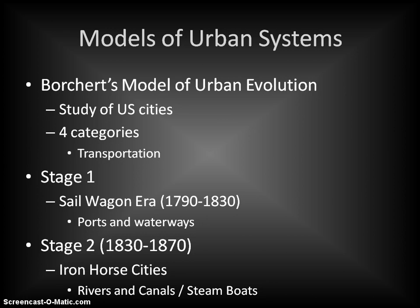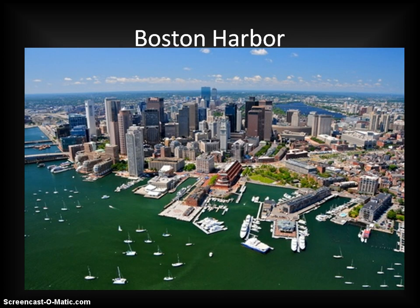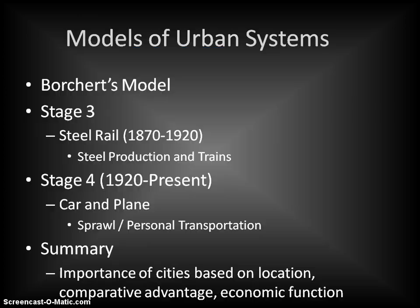Stage two covers 1830 to 1870, called the Iron Horse Era. This is when we start to get more focused on steam — steam engines and the development of steamboats. We also see more development of rivers and canals as methods of transportation and transporting goods. Cities focused on these modes of transport begin to develop. Boston Harbor, for example, was highly significant to the development of the United States during this period.